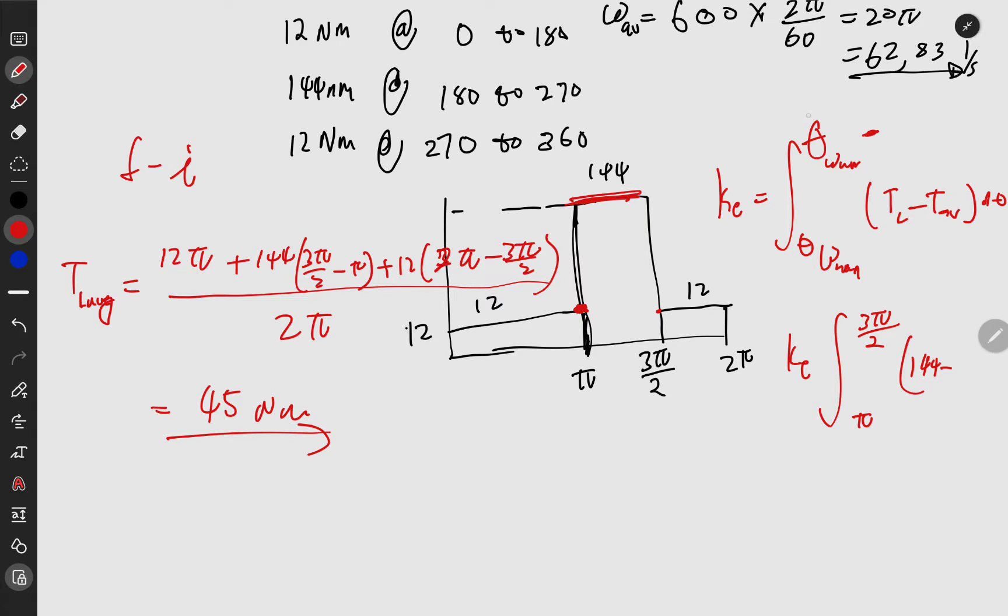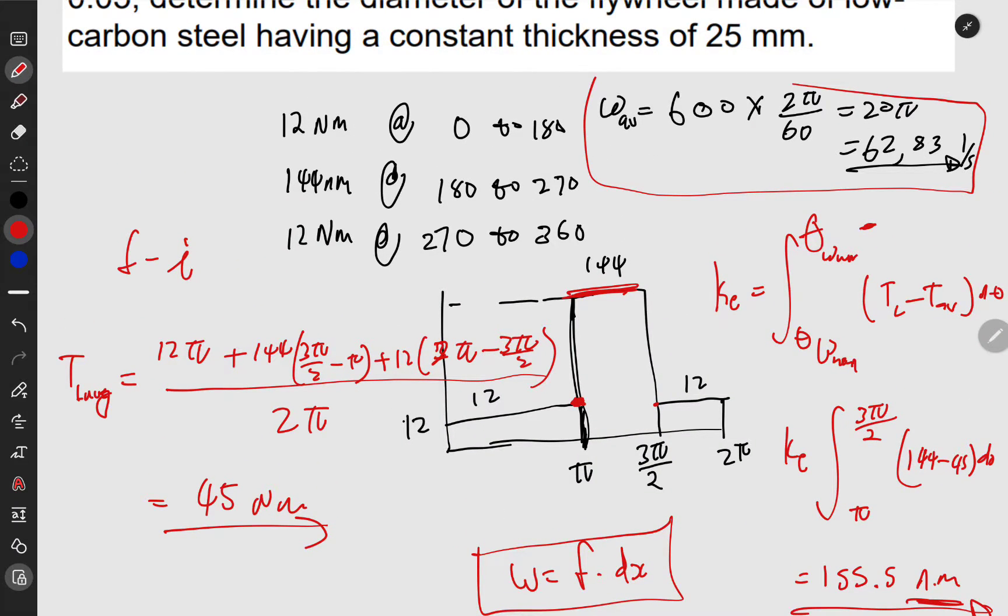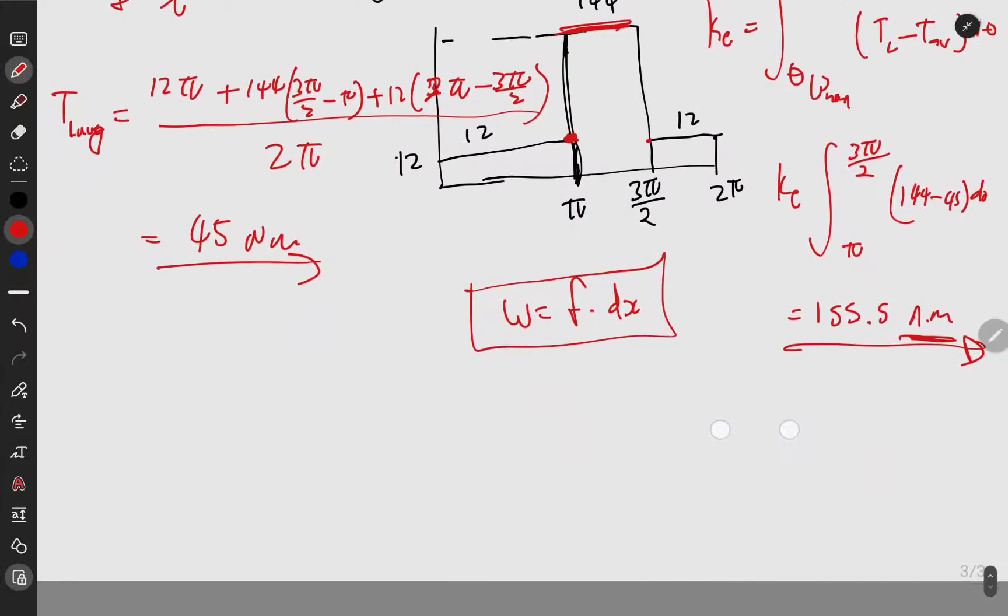We got our average torque. We can go back to this formula now, substituting our average of 45, and integrate d theta. With your basic calculus, you'll get an answer of 155.5 N⋅m—that's newton-meters because work is force times distance.